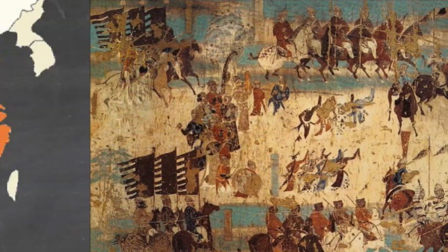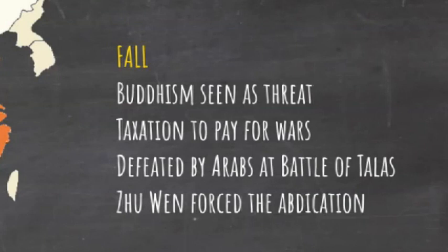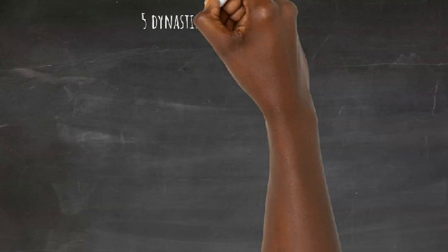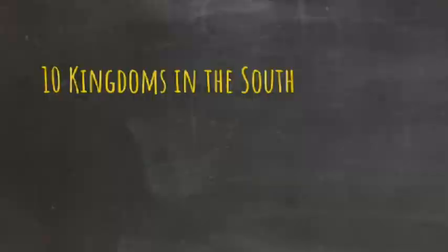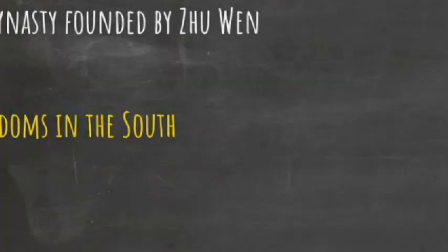Zhu Wen proclaimed himself first emperor of the Liang dynasty, one of the dynasties in a period of five dynasties and ten kingdoms. There were five dynasties that vied for power in the north of China, including the Liang who had overthrown the Tang, and there were ten kingdoms fighting for control of the south. In 916, Kitans from the north conquered the northern dynasties and established the Liao dynasty.